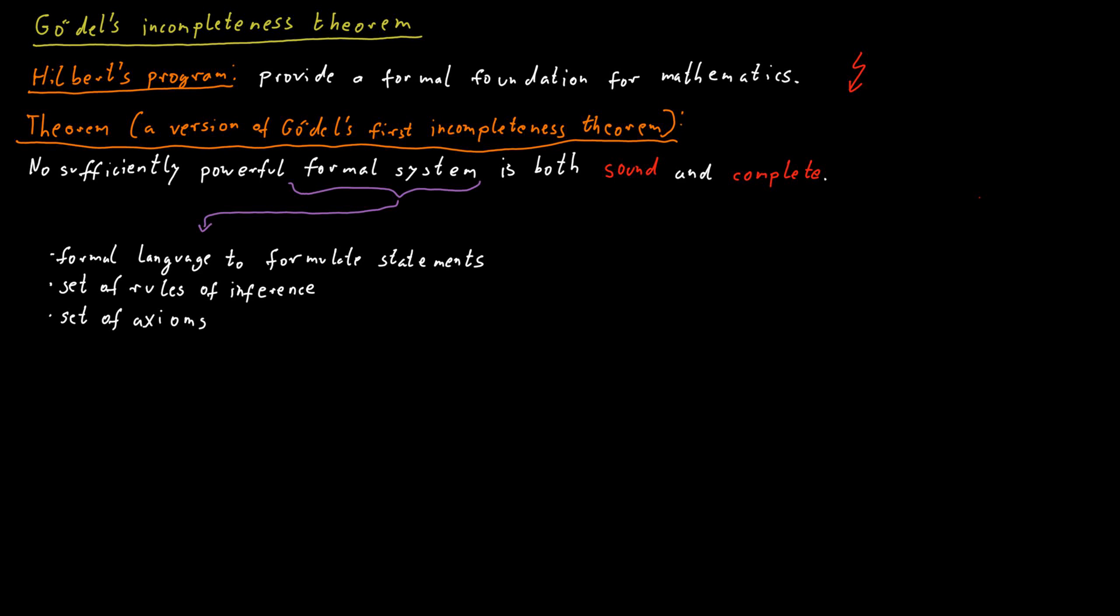So this is really just how mathematics works, right? We make some basic assumption of things that are true. Those are the axioms. And then we have certain formal rules that we can apply to derive new statements from those axioms.